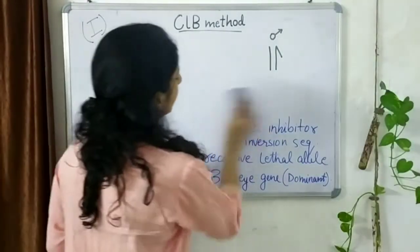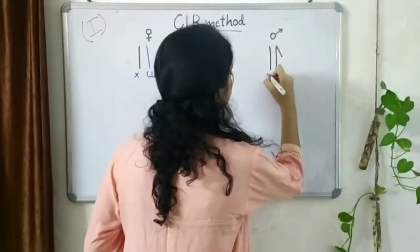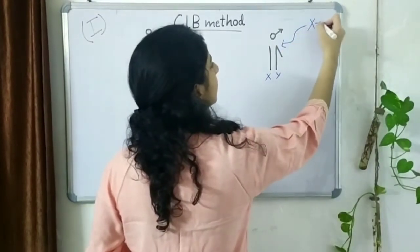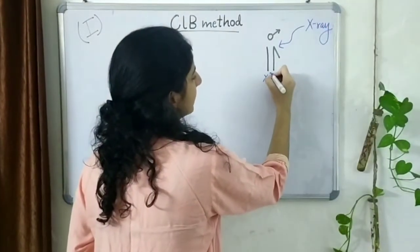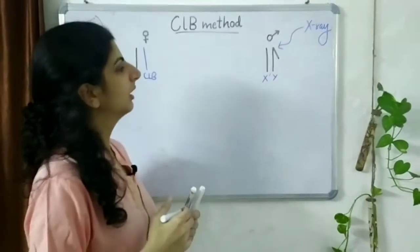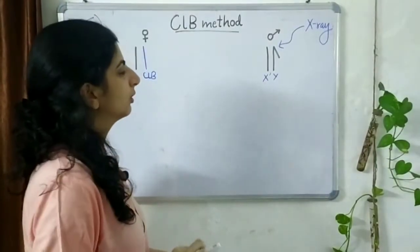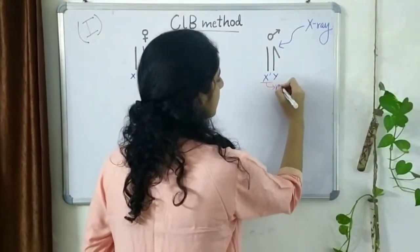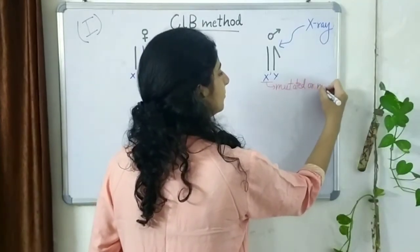So, the female has one normal and one CLB chromosome. The male has a X and a Y. Now, this male is irradiated with the X-ray. Therefore, we will represent this X as X dash. Now, our aim of this experiment has become to know whether this X dash is mutated or not.